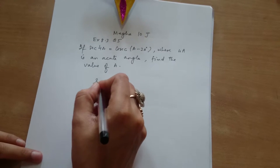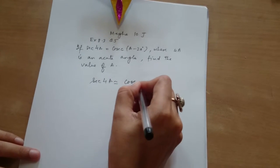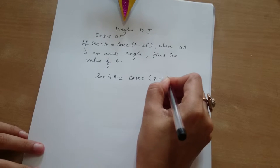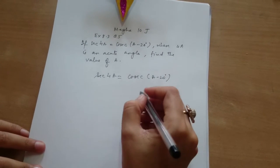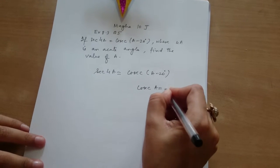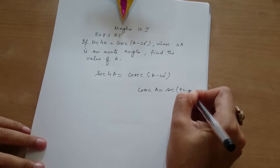Secant 4a equals cosecant a minus 20 degrees. Right. I ask cosec a—cosecant a equals secant 90 minus a. Cosecant a is secant 90 minus a.